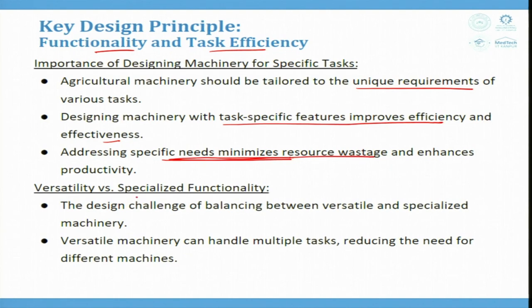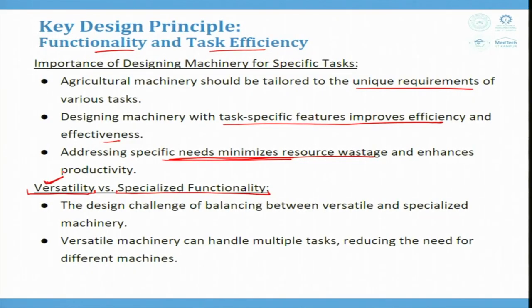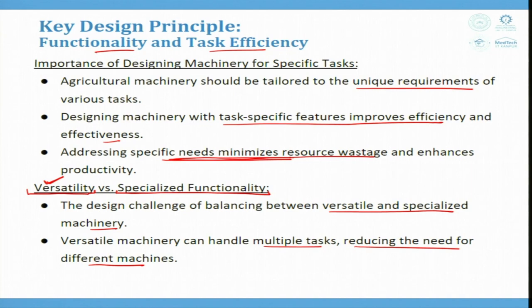Versatility versus specialized functionality: specialized machines perform only one specific task, such as an AMLA grating machine, bale cutting machine, or peanut separator. Versatile machines like tractors can have multiple tools fitted — reapers, tillers — providing versatile operations. The design challenge is balancing between versatile and specialized machinery. Versatile machinery handles multiple tasks, while specialized machinery excels in specific tasks with high precision and efficiency.